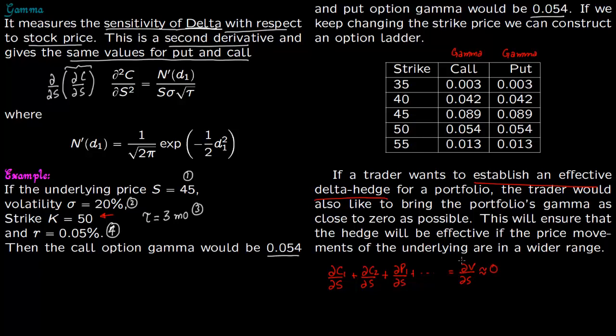Now what the trader will do is find gamma for every one of these values. So for this call he will find the gamma, and find all the gammas. The trader would like to bring the portfolio's gamma as close to 0 as possible. Since this is the second derivative, this will ensure that the delta hedge is even more effective.